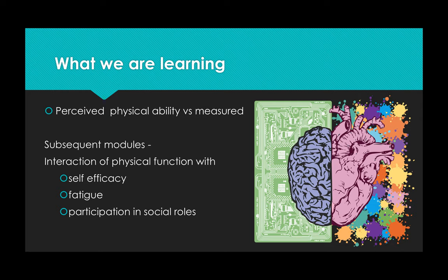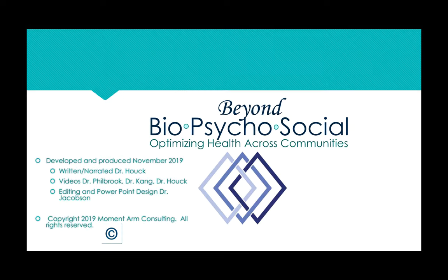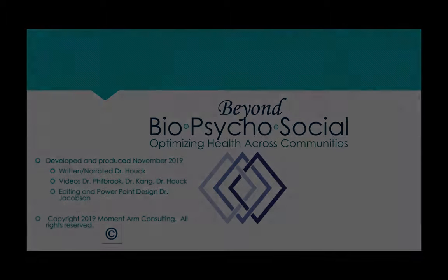We'll discuss the fatigue scale and self-efficacy scale in subsequent modules. So what we're learning is that perceived physical ability and measured physical ability don't always agree. And why they don't agree is interesting in terms of motivations, setting dosage, and just treating our patient as a person. So subsequent modules will discuss this interaction, the physical function with the other PROMIS scales like self-efficacy, fatigue, and participation in social roles. And hopefully this will come together for you as it did for us in figuring out a more biopsychosocial approach to care. This concludes the Beyond Biopsychosocial Physical Function Measure Module.